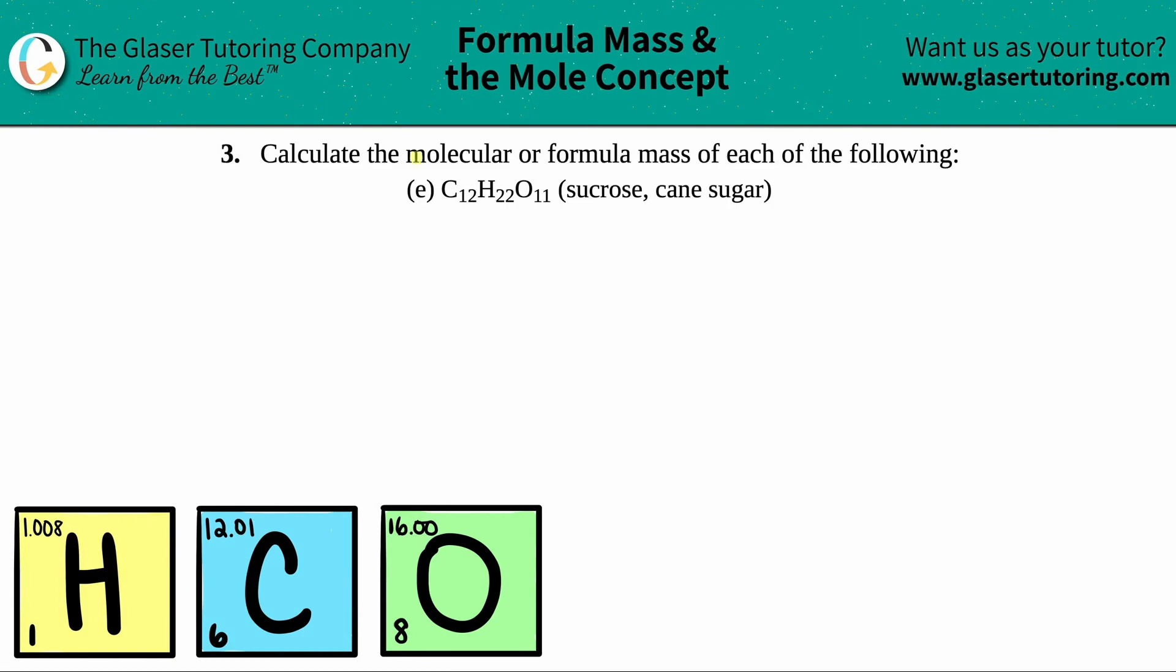Number three, calculate the molecular or the formula mass of each of the following, and then we have letter E. So in this case, we have to find the molecular formula mass for C₁₂H₂₂O₁₁, which is sucrose, aka cane sugar. This is like the granulated white sugar that you would use for baking.